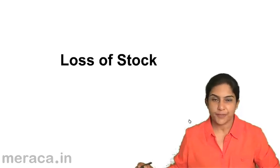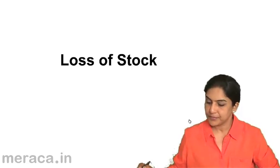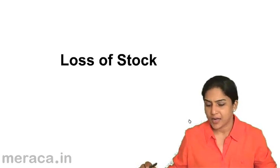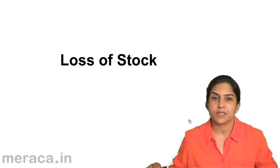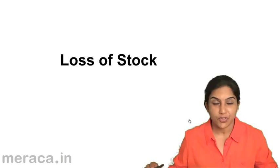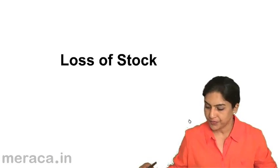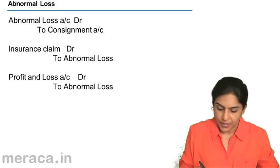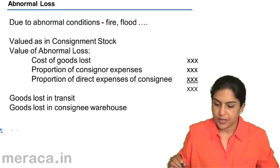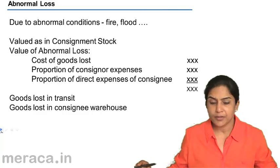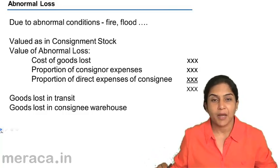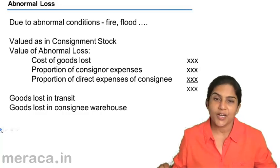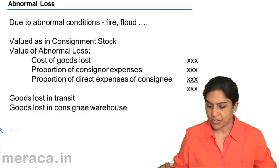Let us now consider loss of stock — what happens in consignment accounts if goods are lost. Loss is considered in two types: it may be abnormal loss or normal loss. Let us first discuss abnormal loss.